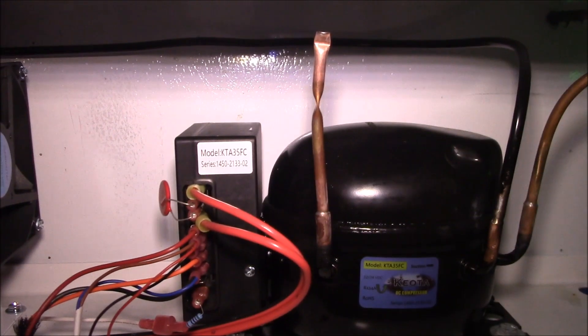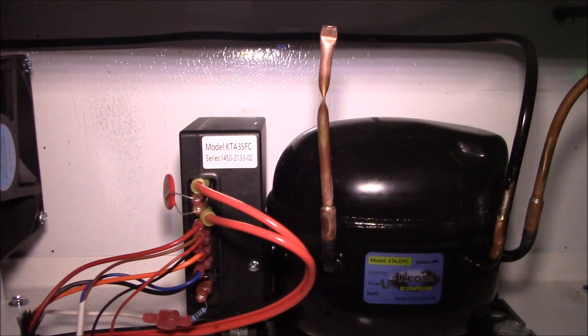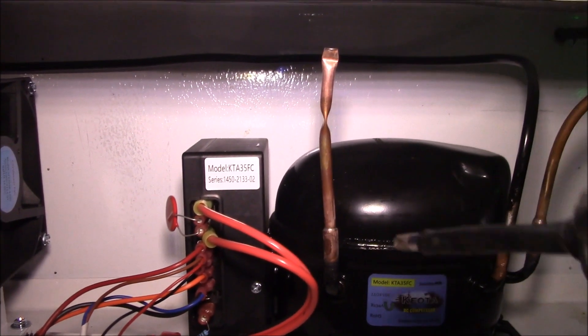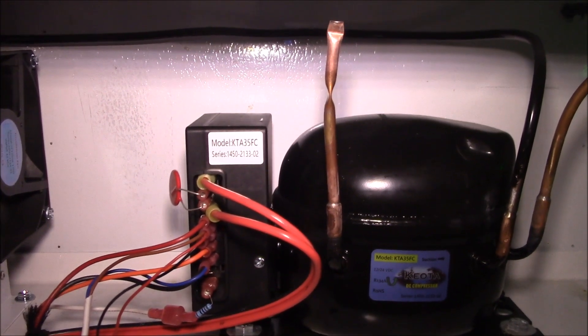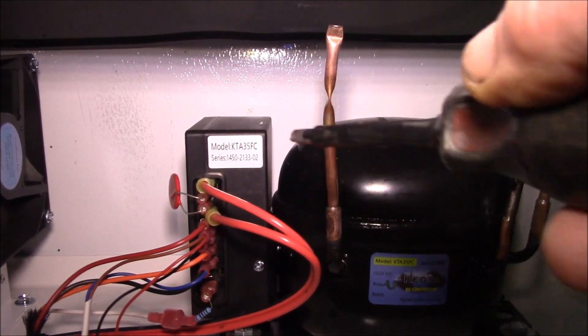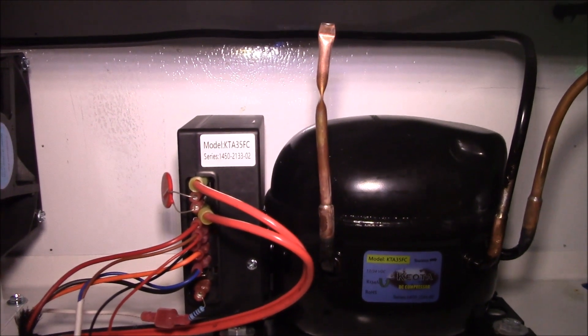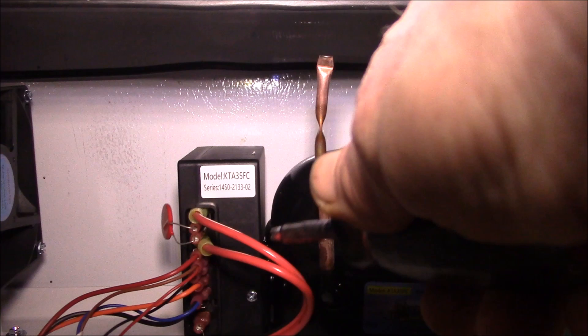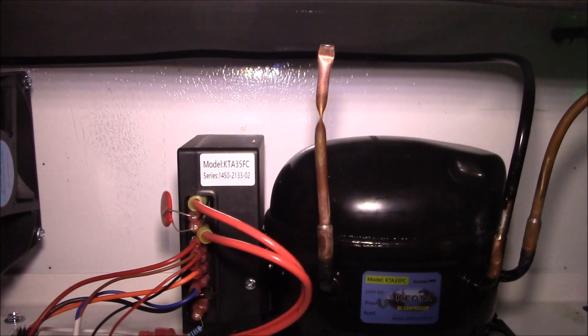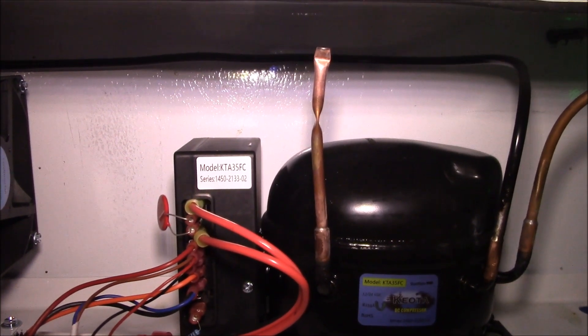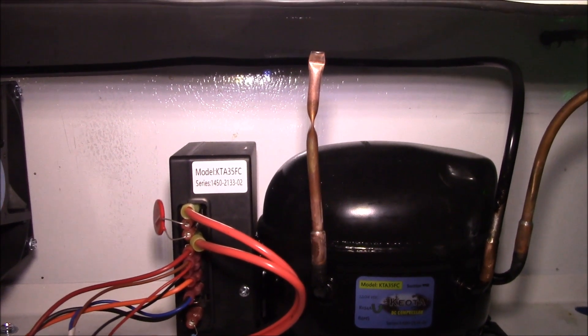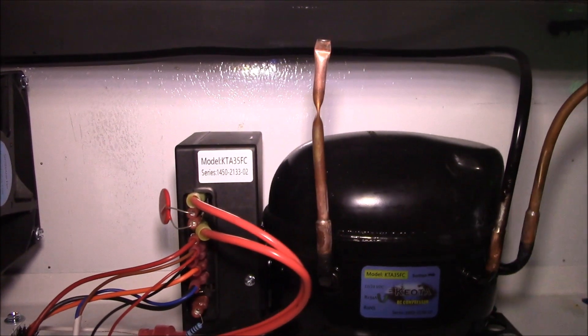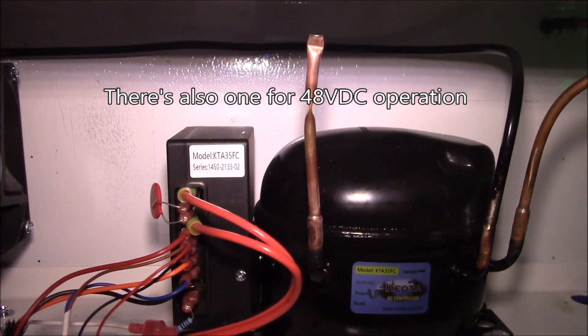That's what they use in RV compressors that you can plug into shore power and have your refrigerator run off AC power. Then if you unplug the AC connection it switches back to DC power. Some freezer manufacturers offered that as an option so you could upgrade to the AC/DC controller by swapping out this control box.